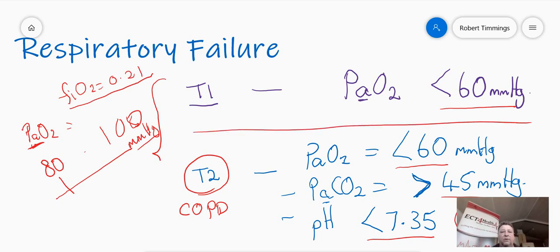Type 1, low oxygen, below 60 PaO2. And type 2 certainly is the same as type 1, but it adds hypercapnia and a respiratory acidosis on top of that. That, in a nutshell, is respiratory failure.